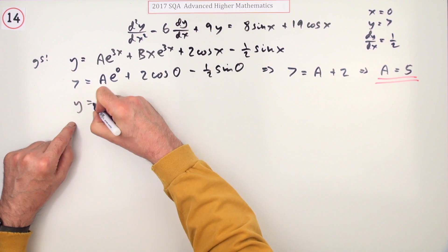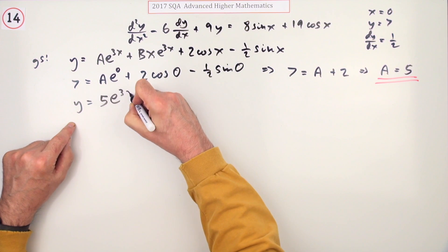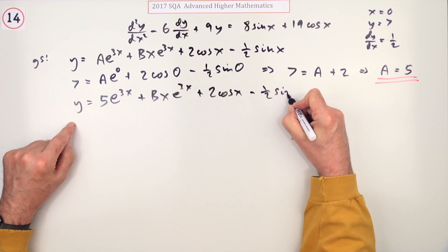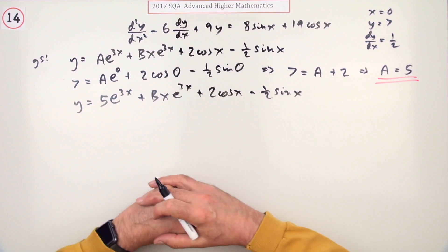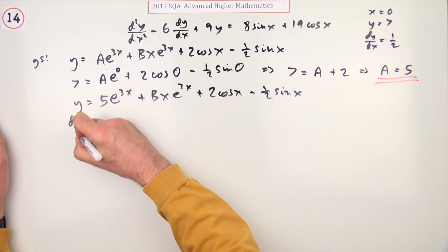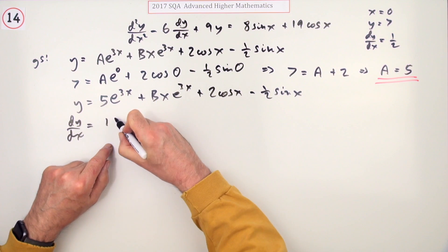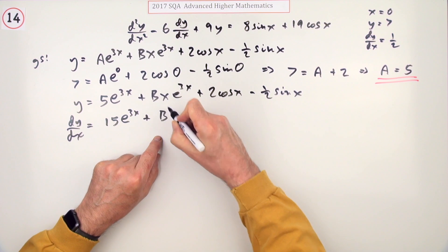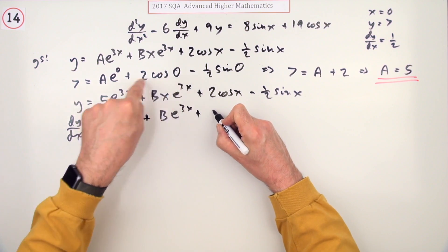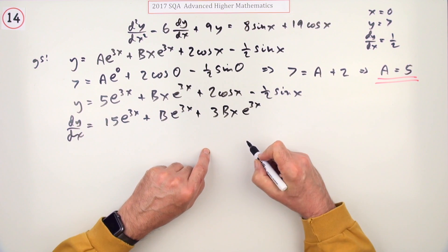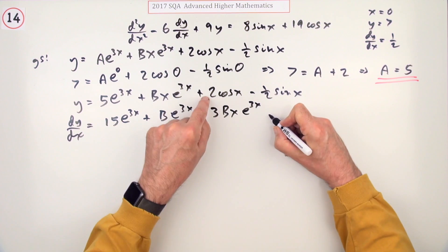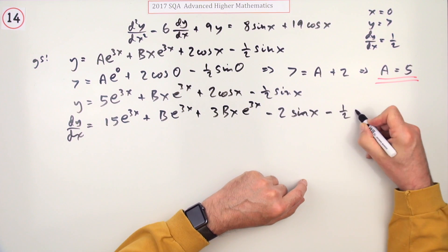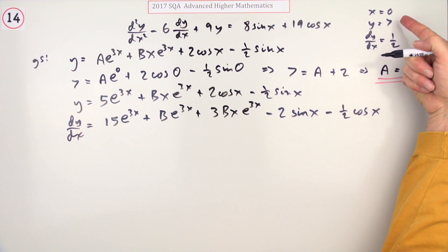Now the equation reads y equals 5e to the 3x plus Bxe to the 3x plus 2 cos x minus a half sine x. To use this value of a half, you need to differentiate it. dy/dx will be 15e to the 3x. This unfortunately is a product, so I'll have Be to the 3x plus 3Bxe to the 3x, minus 2 sine x minus a half cos x.